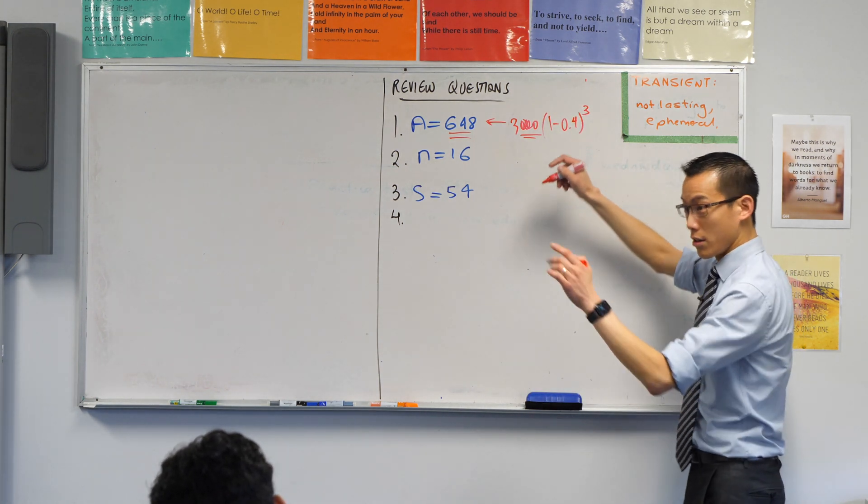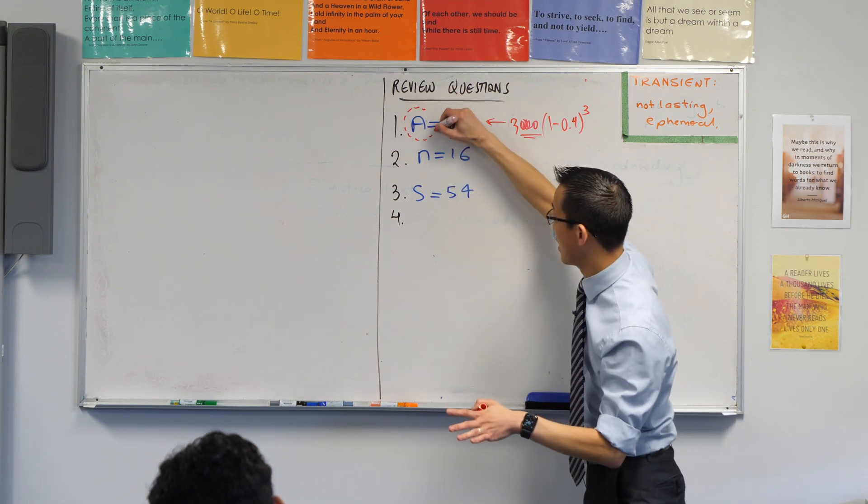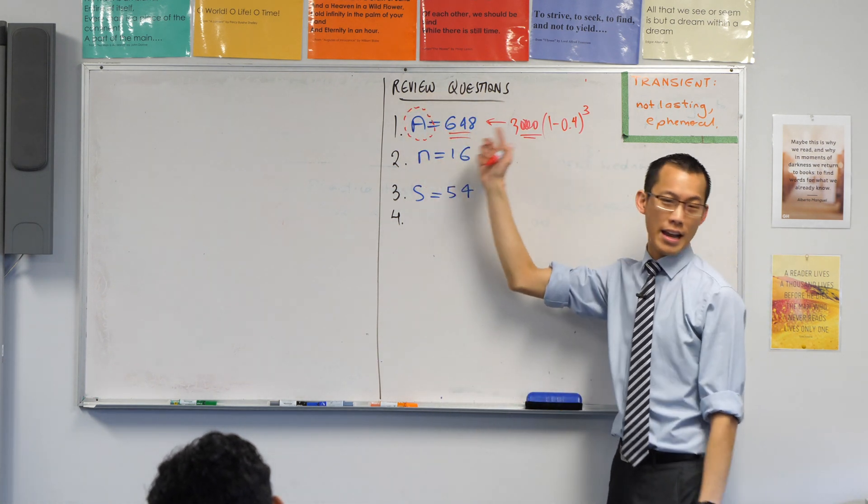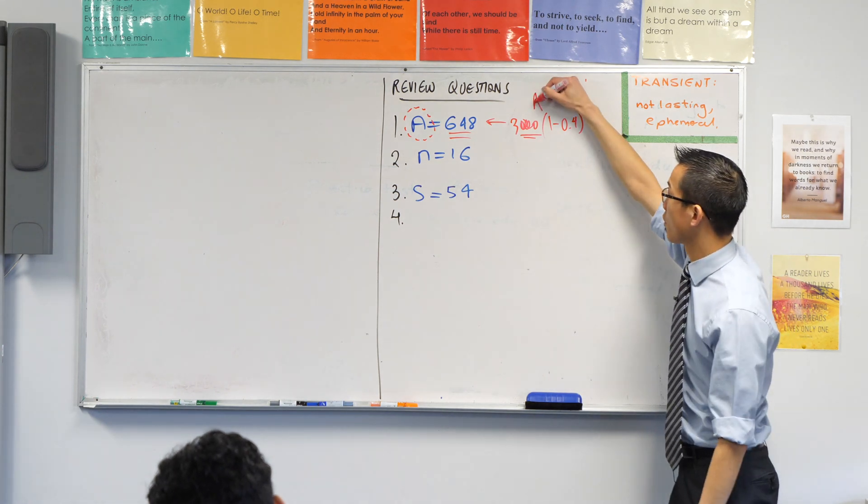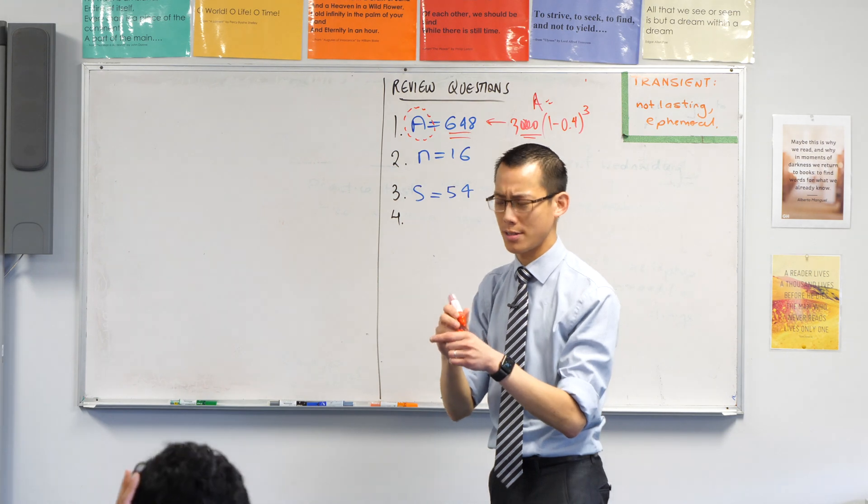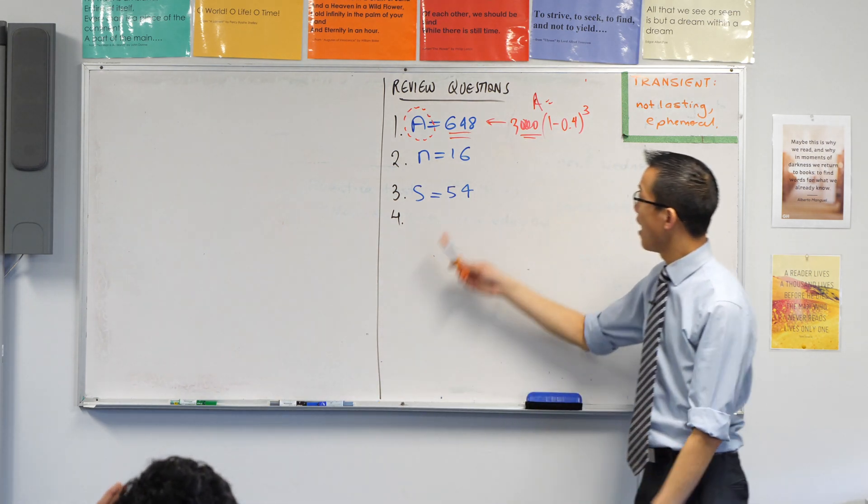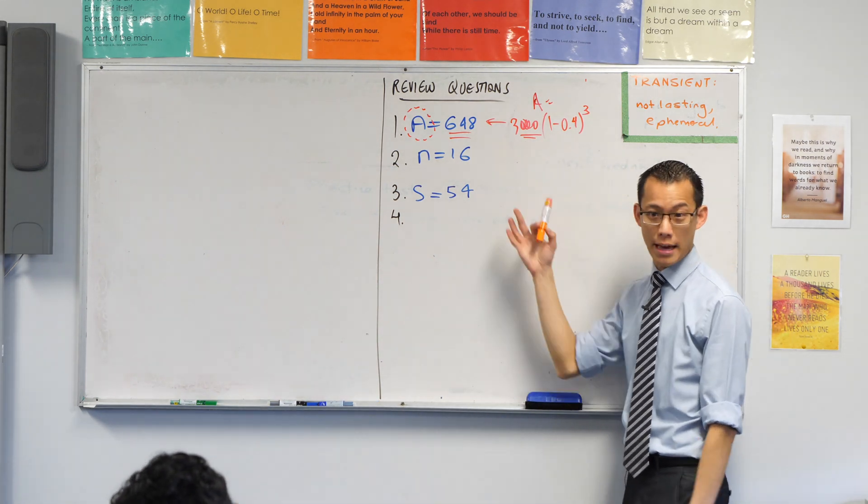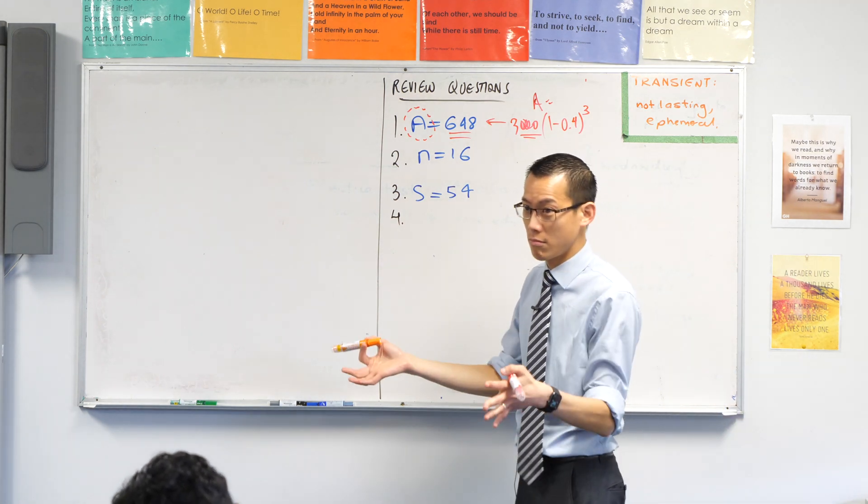The formula for compound interest is A equals and then there's stuff. I actually did say I was going to do this last time and forgot. You know how this is sort of based on compound interest—what's the other kind of interest? Simple. Simple interest.